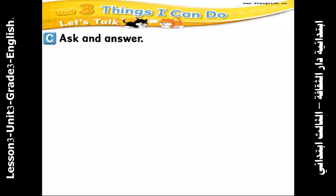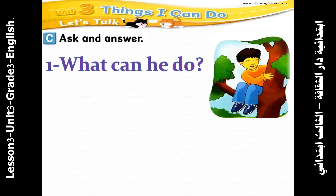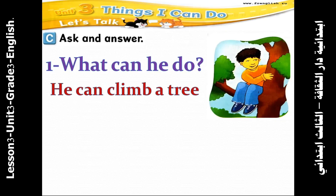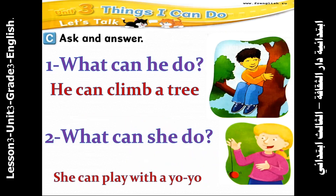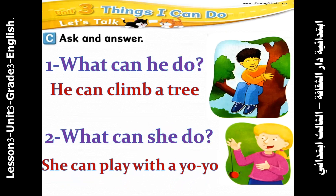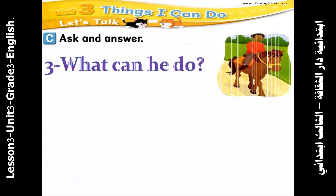In Activity C on page 25, ask and answer. Look at the four pictures on page 25. Number one: What can he do? He can climb a tree. Number two: What can she do? She can play with a yo-yo.